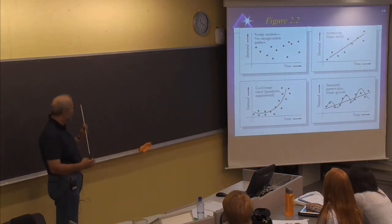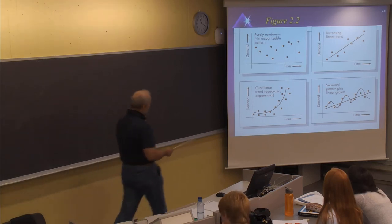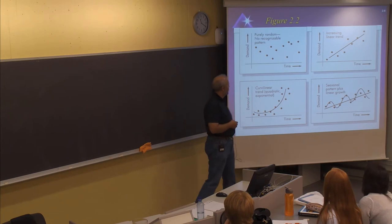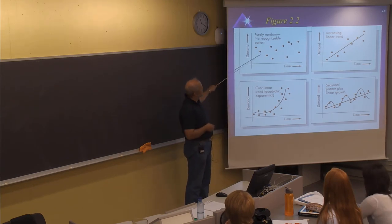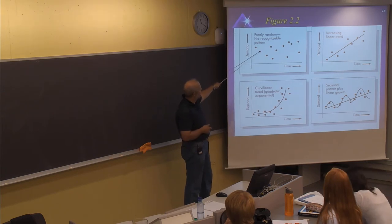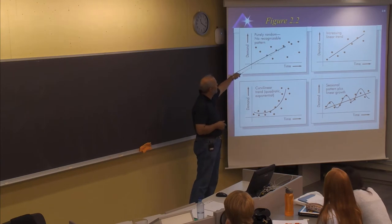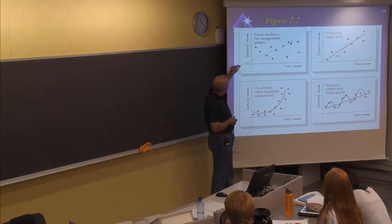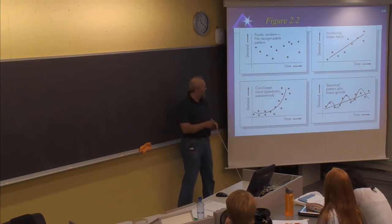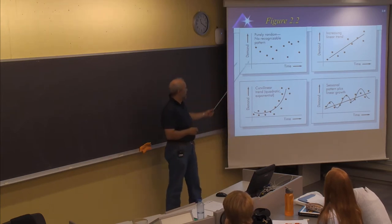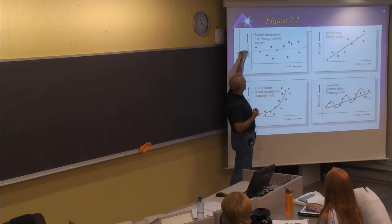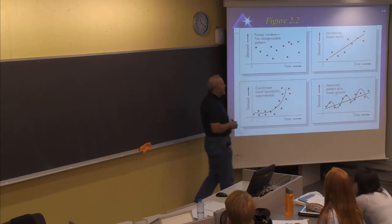Here we can see different types of sales or demand. We have demand on the y-axis and time on the x-axis. In this first example, the demand seems to be random — there is no pattern. Sales go up and down, and when you try to identify an increasing trend, a sudden low demand destroys it. So here this seems to be more or less random, and to make a forecast you should probably find the average demand over time, if you don't expect demand to change.